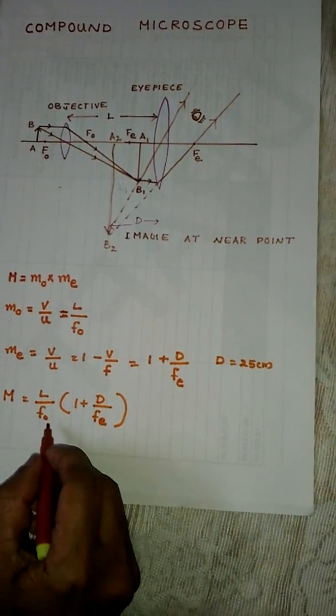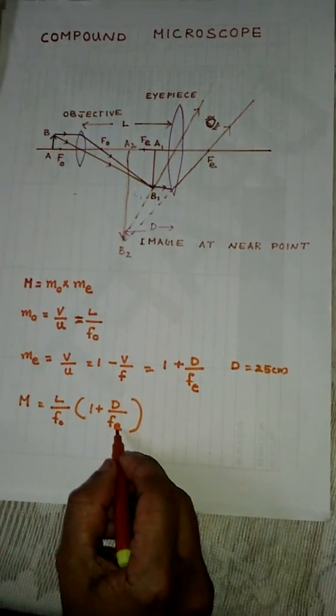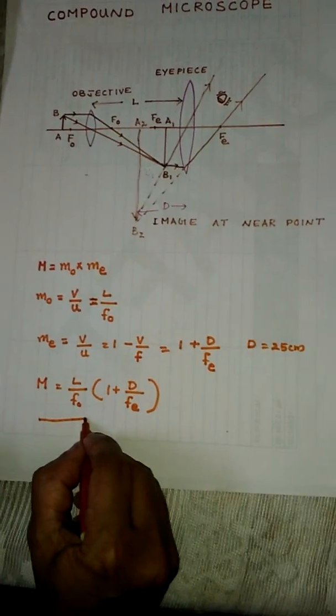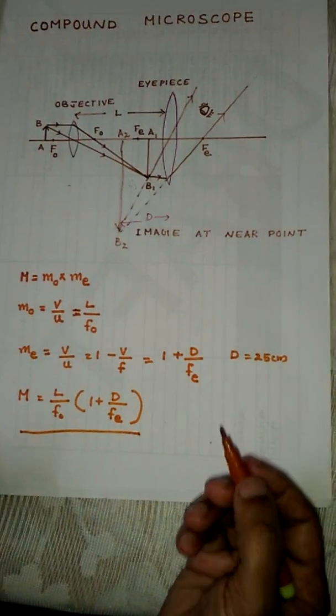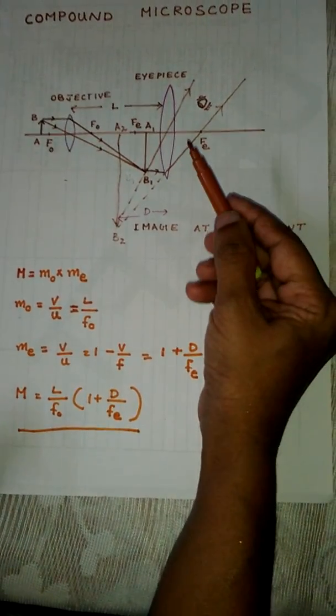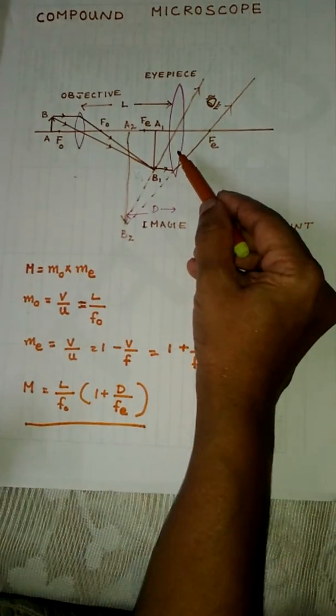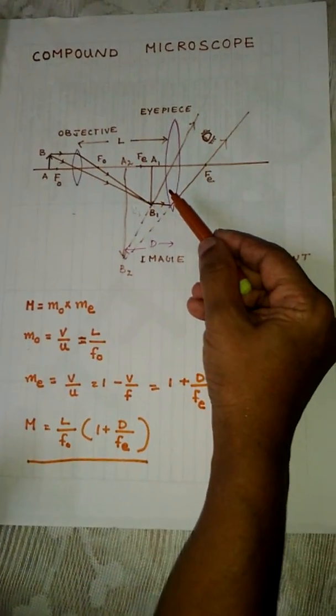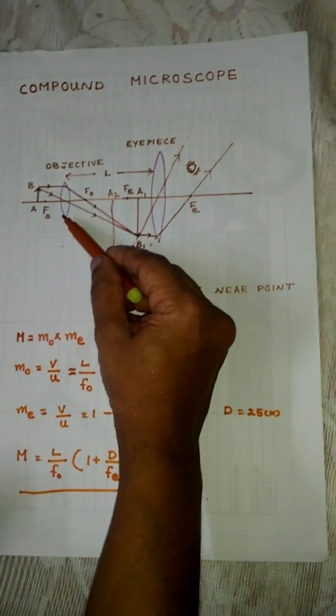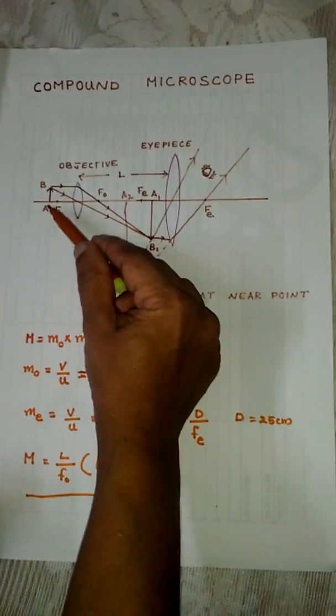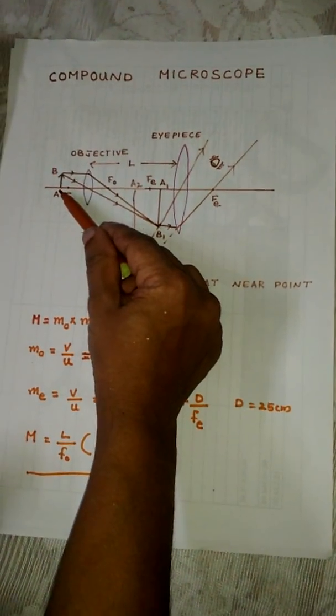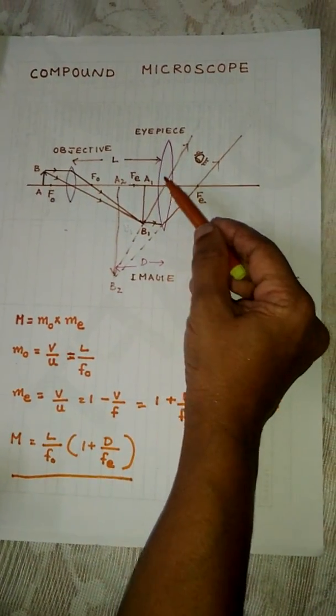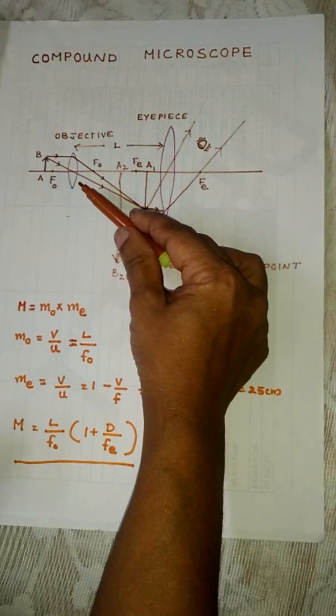As the focal length of the objective and eyepiece decreases, the magnifying power increases. For the construction of a compound microscope, the two lenses should be of small focal length to have larger magnifying power. The objective should be of small aperture as the object is a minute object. The eyepiece aperture is larger than that of the objective.